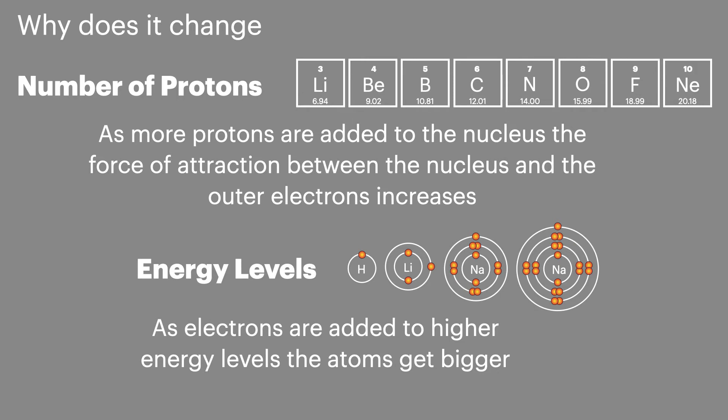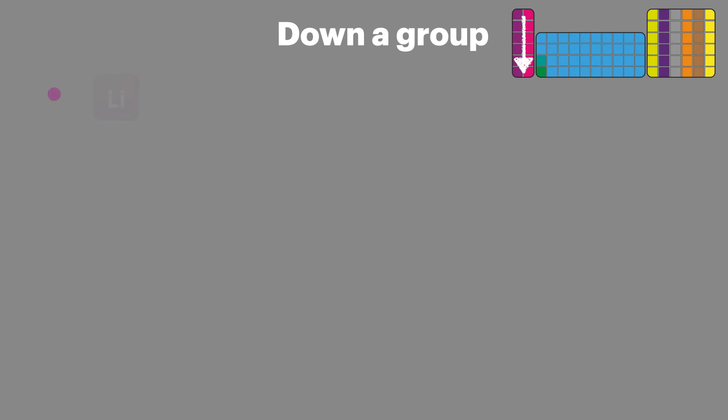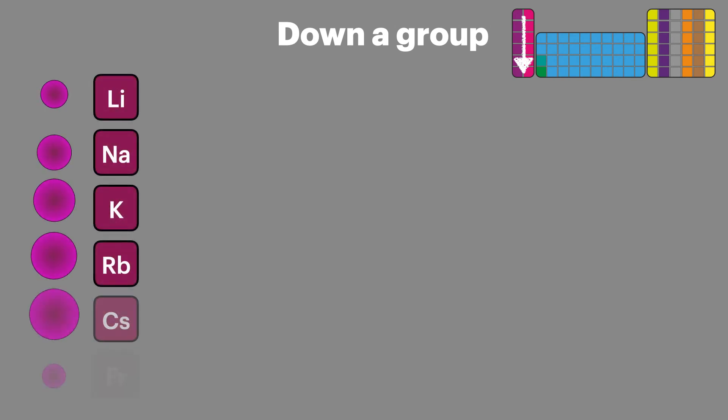We'll now relate this to the periodic table. So as we go down the group, then each new element has its highest electron in a new energy level.